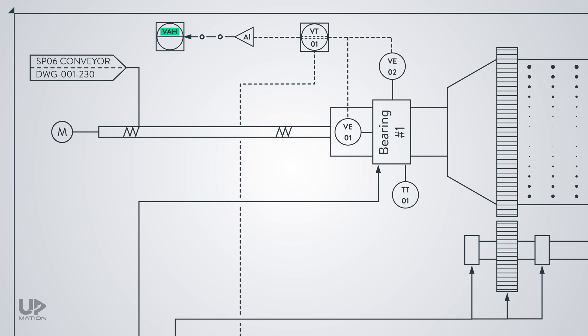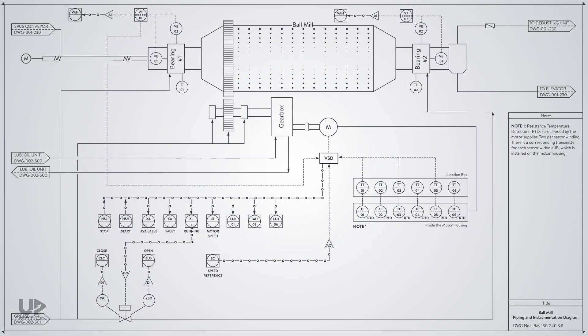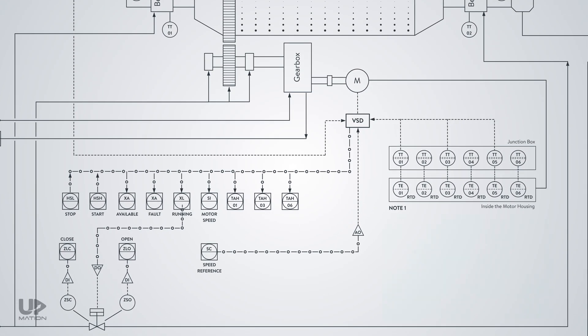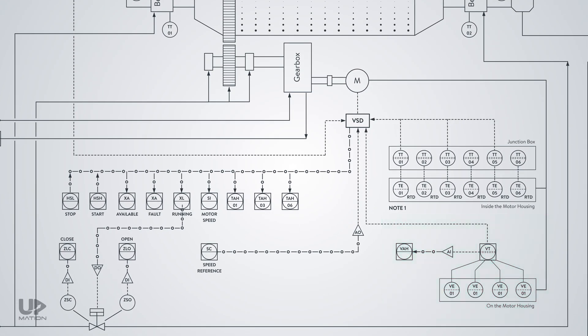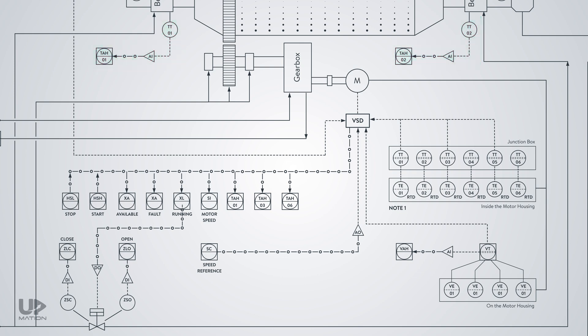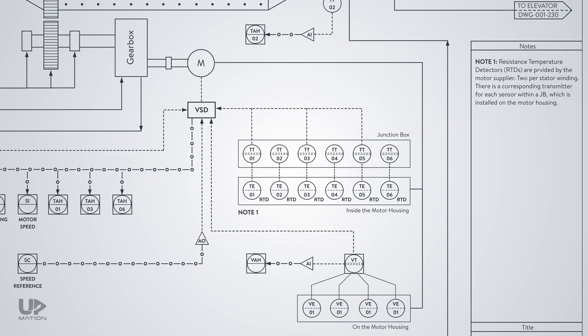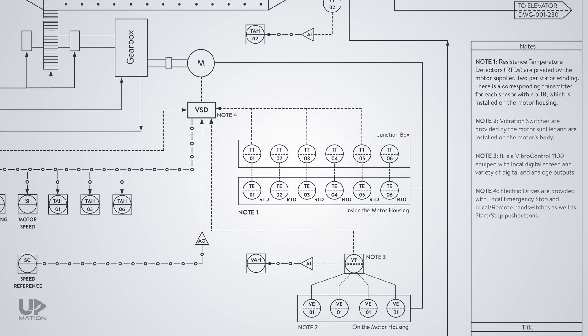VAH is short for vibration alarm high. We are almost done with this P&ID, except for some details like the same vibration scenario for the electric motor itself, sending the temperature transmitters to the PLC and operating station, and writing some notes beside the drawing for more clarity.